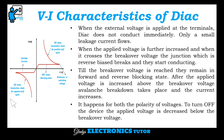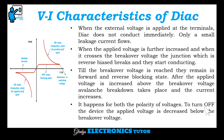This is the on-state conduction state for the negative half cycle, and this is the on-state conduction state for the positive half cycle. Until the breakover voltage is reached, they remain in forward and reverse blocking state. Once the applied voltage is increased above the breakover voltage, avalanche breakdown takes place and the current increases. This happens for both polarities of voltage. To turn off the device, the applied voltage is decreased below the breakover voltage.